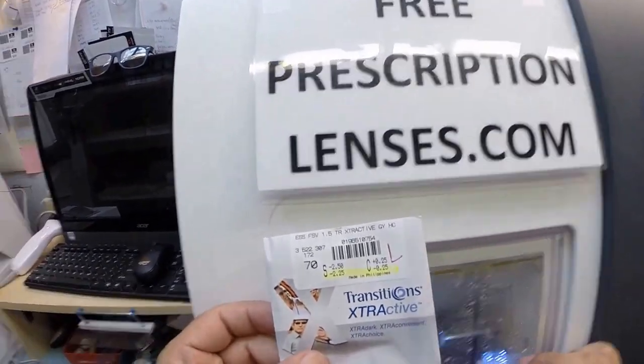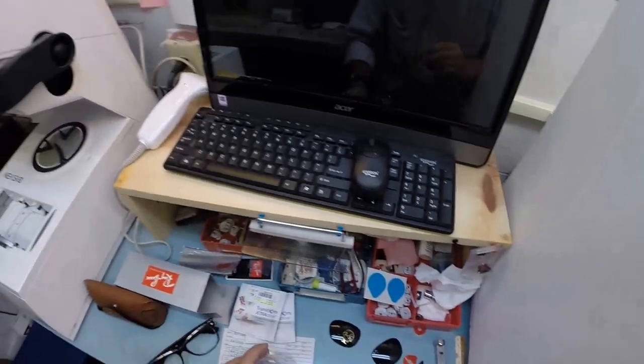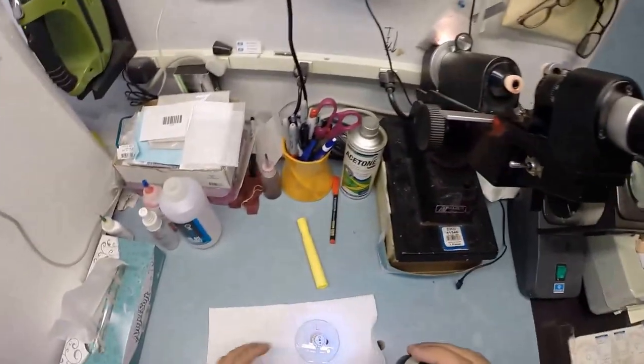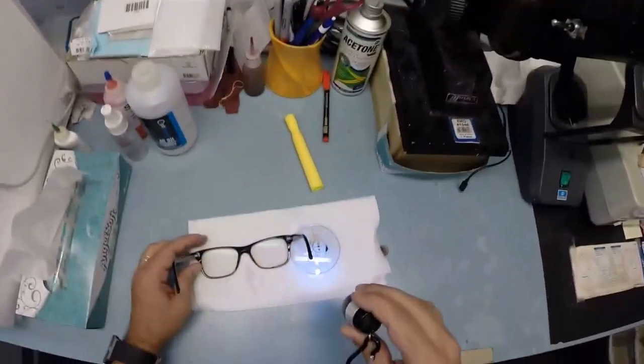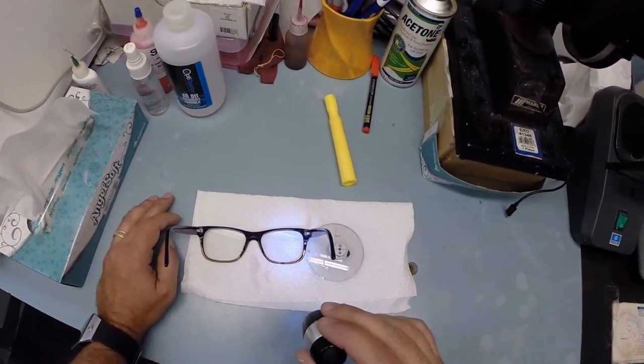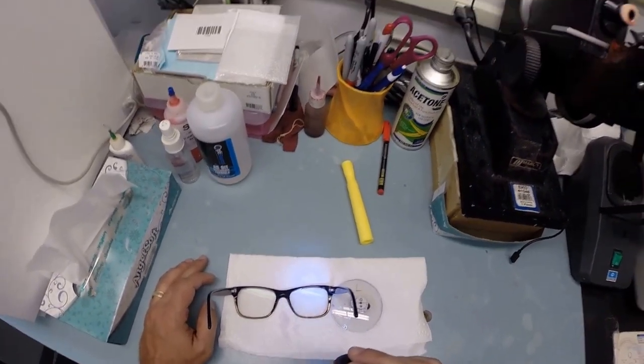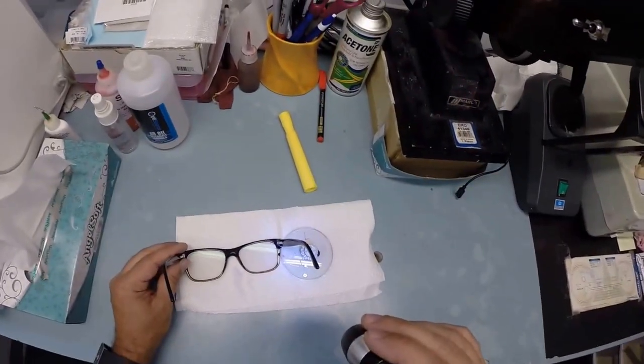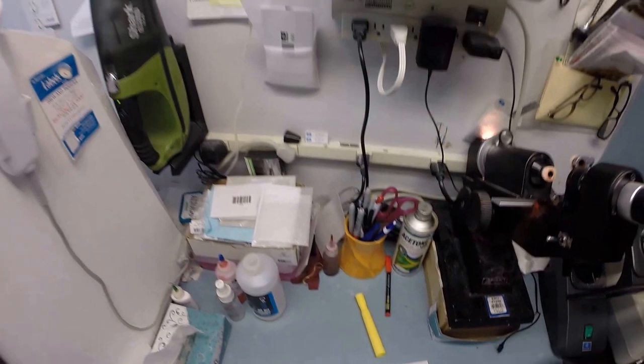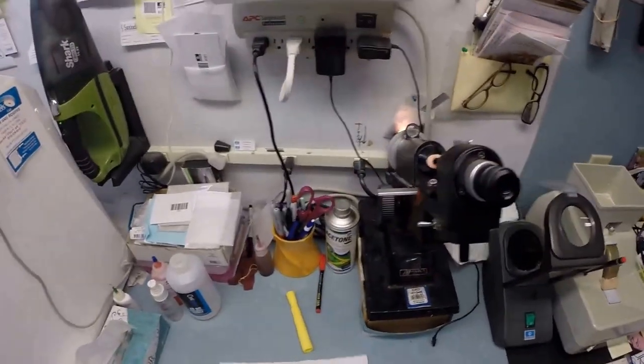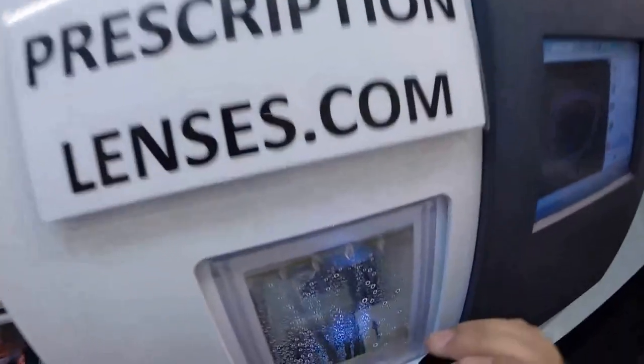Now the transitions extra active is designed for extra active people who want it that much darker. It still has a little bit of a residual color inside. Let me get a piece of white paper. I'm gonna place my lens next to it. You can see how it has a little bit of a gray tint even indoors compared to my regular transition lenses in my frame. It has like about what I would call a 10% gray number one solid tint even indoors, but it's gonna get very dark outdoors.